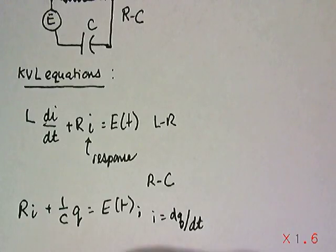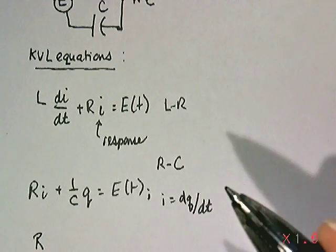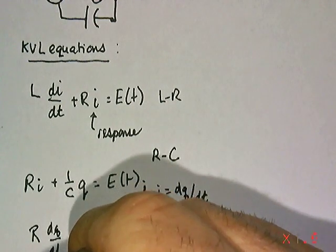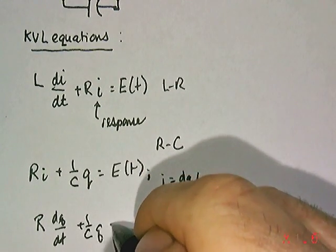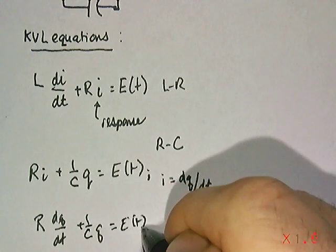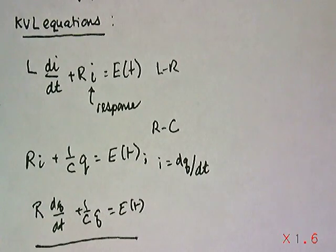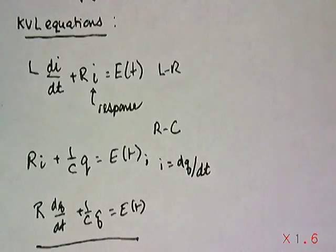Another way of transforming this equation for differential purposes is that you can rewrite this as R times DQ/DT plus 1 over C times Q equals E(t). And now you have a differential equation in Q, which is the charge of the system. Either way, you have two linear differential equations to model the flow of voltage in these series circuits.